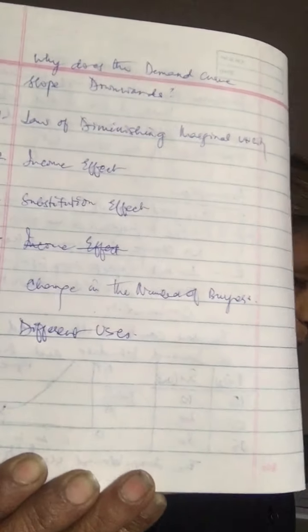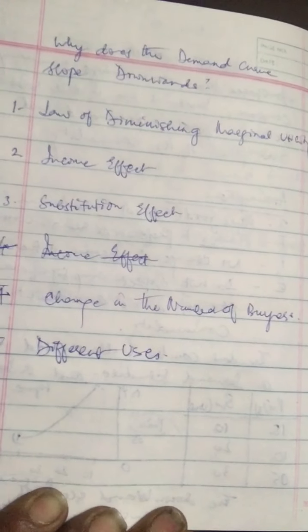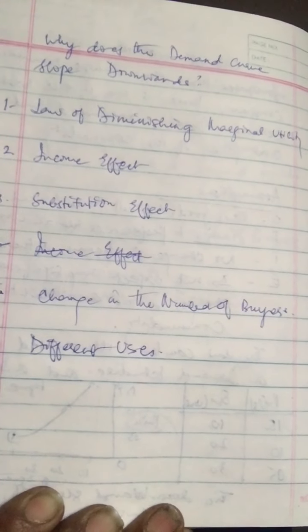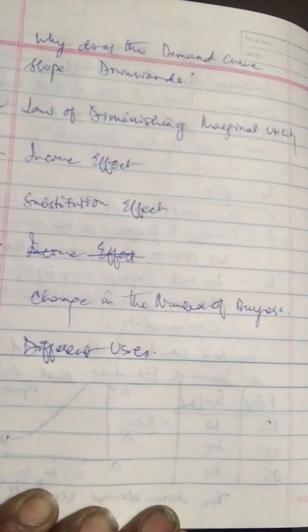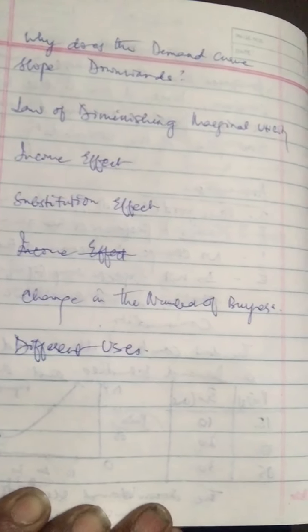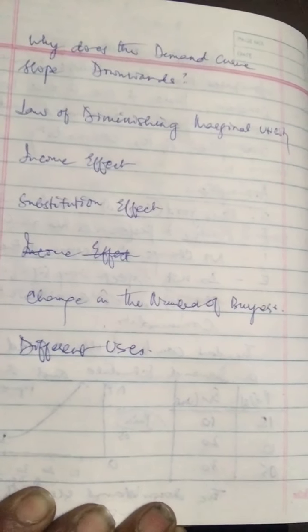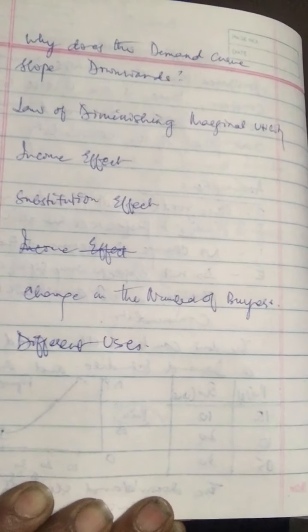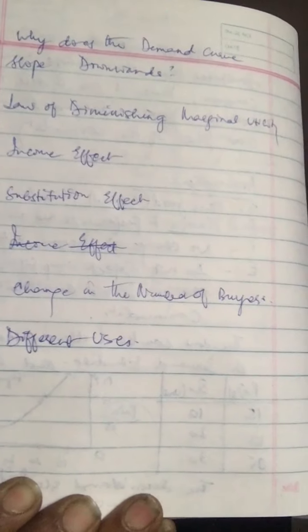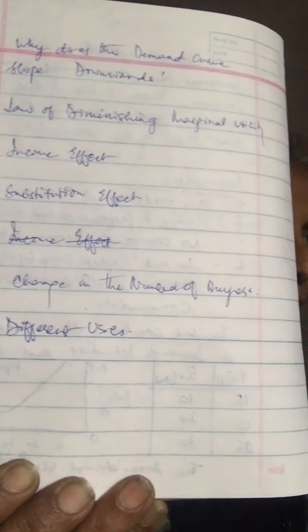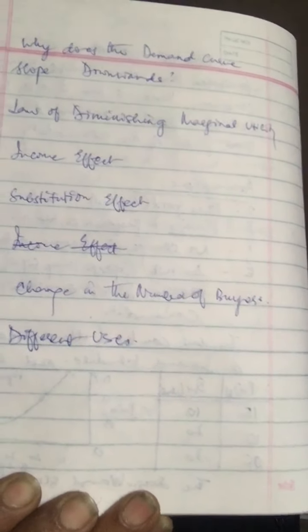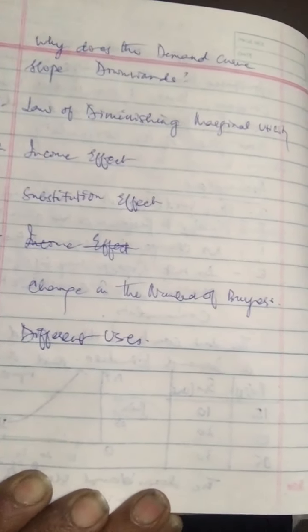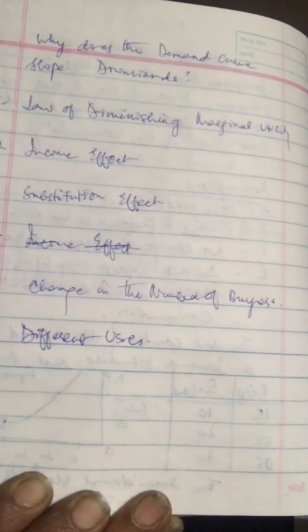This can be explained in terms of the following factors. First is the law of diminishing marginal utility. As the consumption of a commodity increases, the marginal utility derived from each successive unit goes on falling. So for every additional unit to be purchased, the consumer is willing to pay less and less, and to lure the consumer you have to bring down the prices.